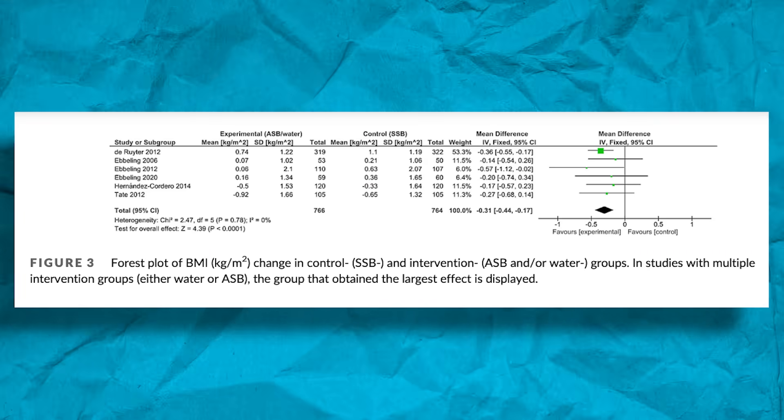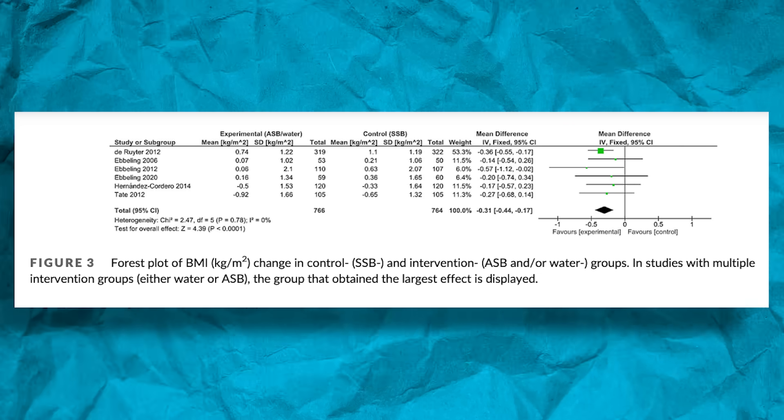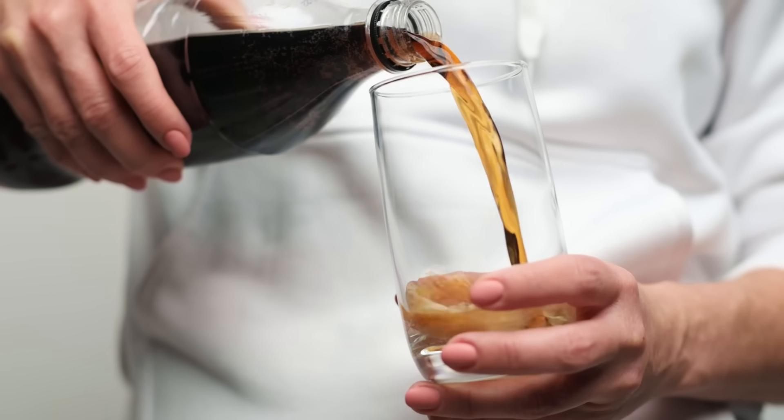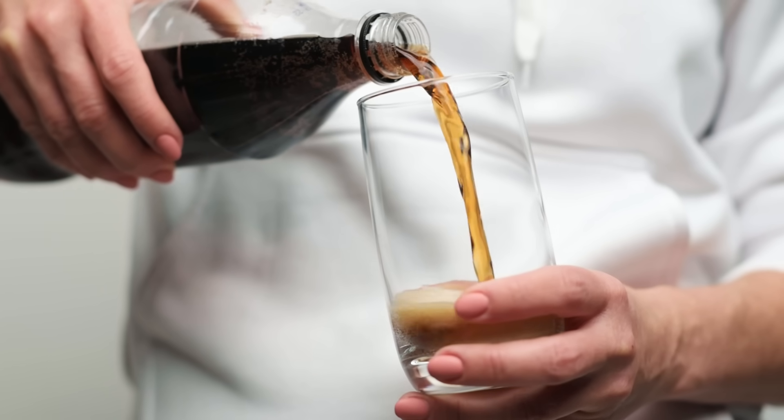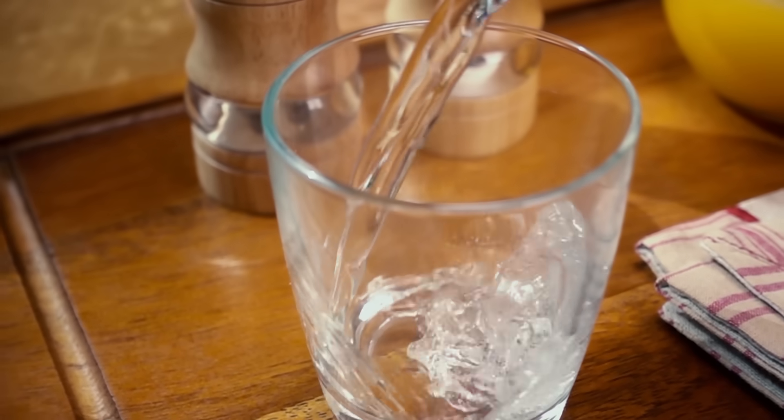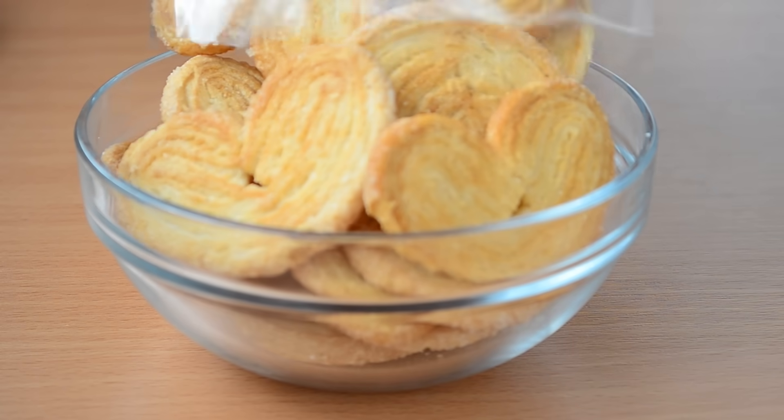In human randomized controlled trials, substituting diet drinks for sugar-sweetened beverages produces weight loss. It's very clear, very consistent, and it even produces a little bit more weight loss than substituting with water — probably because people eat fewer calories since they're getting that sweet taste fulfilled from the diet drinks. But in the cohort or epidemiology studies, we see the opposite: diet drink or artificial sweetener intake tends to be associated with increased levels of body fat and obesity.